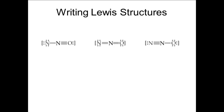In the left structure, the left nitrogen is assigned seven electrons. With five valence electrons, there is a formal charge of minus two. The center nitrogen is assigned four electrons, for a formal charge of plus one. And the oxygen is assigned five electrons, with six valence electrons, for a formal charge of plus one.